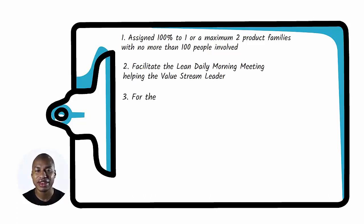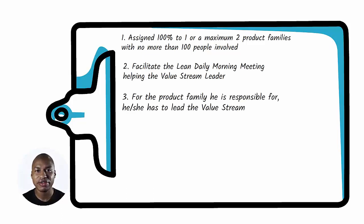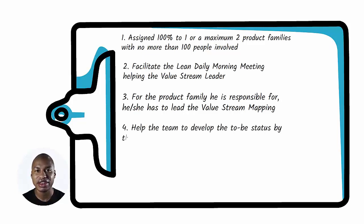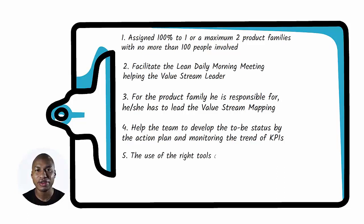Third, for the product family he is responsible for, he has to lead the value stream mapping. Fourth, once the value stream mapping is created, he has to help the team to develop the future state by an action plan and monitor the trend of KPIs. Fifth, the use of the right tools and keeping the focus on the constraints is one of the main tasks.